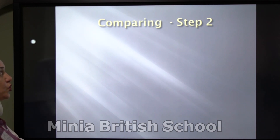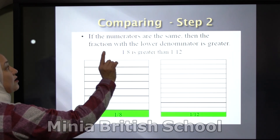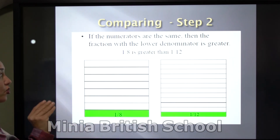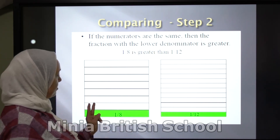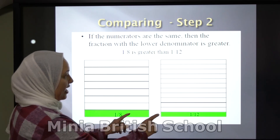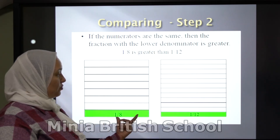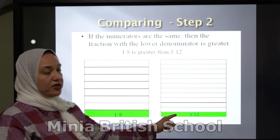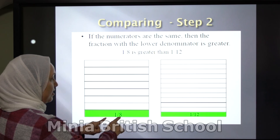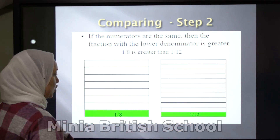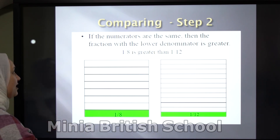Step number 2: to compare between fractions, if the numerators are the same, then the fraction with the lower denominator is the greater one. Look at the two figures: here you have 1 over 8, and here you have 1 over 12. The colored part of 1 over 8 is greater than the colored part of 1 over 12. The numerators are the same — it's 1. The denominators are 8 and 12, and 8 is lower than 12, so 1 over 8 is the greater fraction.